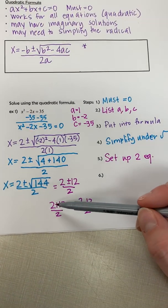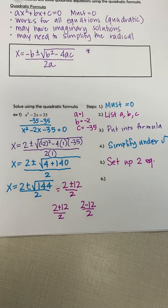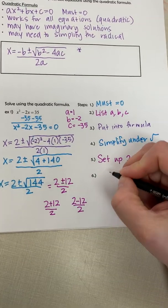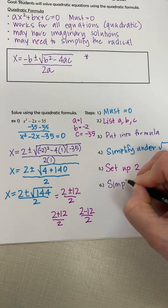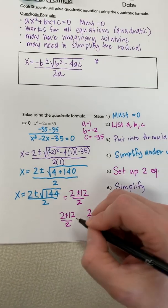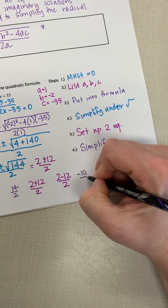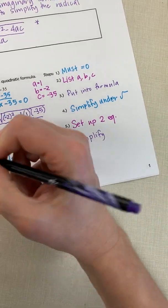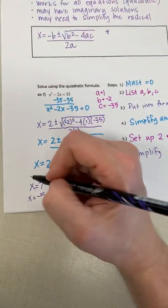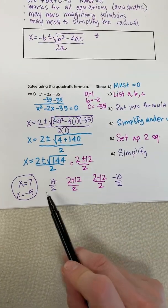But when we solve them, we want to make sure we do the whole top first and then divide. So this one will be 14 over 2 and this one will be negative 10 over 2. So our two answers will be 7 and negative 5. There's our two answers that we get from these fractions.